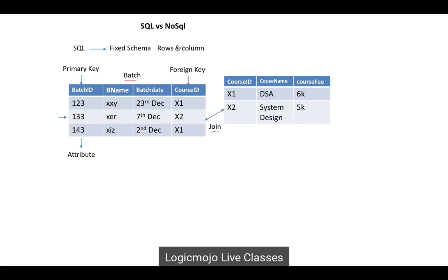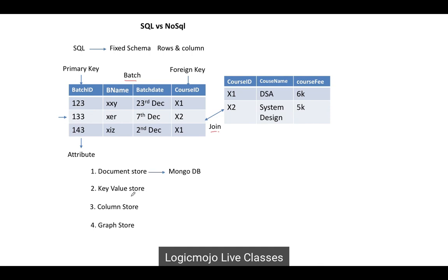Now let's see what NoSQL is. NoSQL has four main types: document store, key-value store, column store, and graph store. For example, MongoDB uses the document store approach; Redis and DynamoDB use the key-value store; Cassandra uses the column store; and Neo4j or InfiniteGraph use the graph store approach of NoSQL.